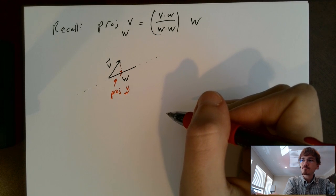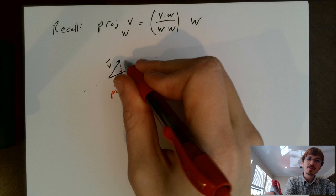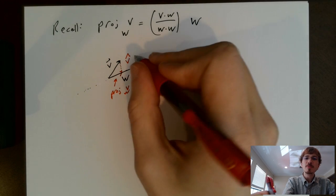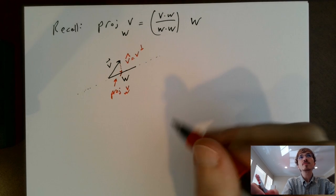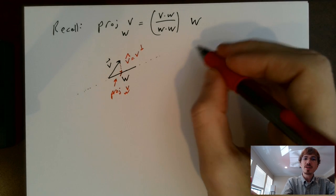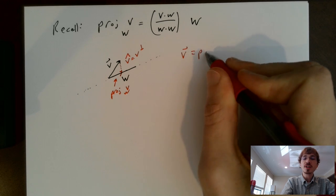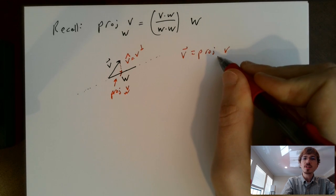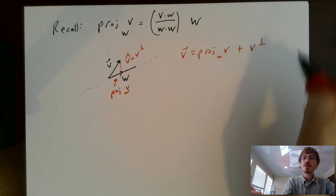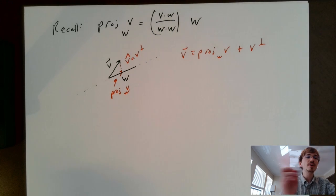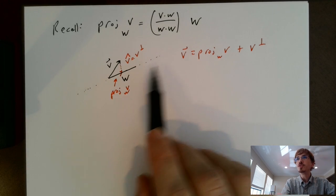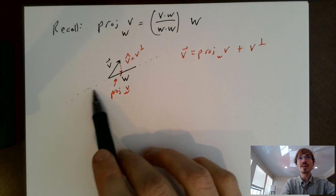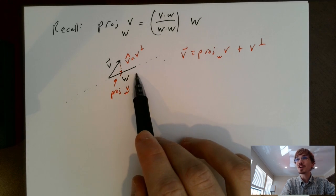We called this the orthogonal component. I think we called this v with a perp next to it. And what did we satisfy here? We know that v equals the projection of v onto w plus that orthogonal component. This is how we defined things at the beginning of the course for orthogonal projections. We can view this as a projection onto a subspace — the line spanned by a single vector w.